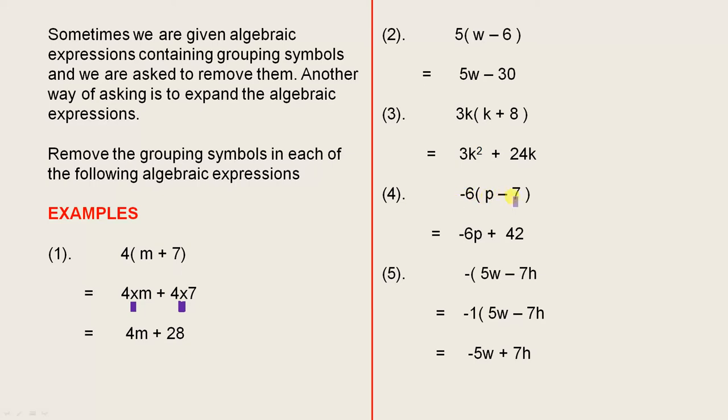Minus 6 outside of p minus 7. That gives us minus 6p plus 42. Remember, minus times minus gives you a plus.